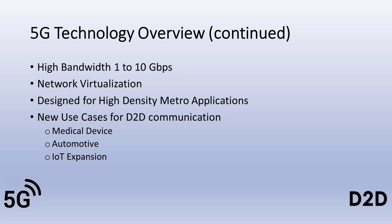The new specifications from the Third Generation Partnership Project (3GPP) specify bandwidth of one to ten gigabytes per second, wireless network virtualization, and the ability to support high device density in metro applications. There will be many new use cases for D-to-D communications. Research has begun for medical devices, automotive, and the expansion of Internet of Things devices and capabilities.